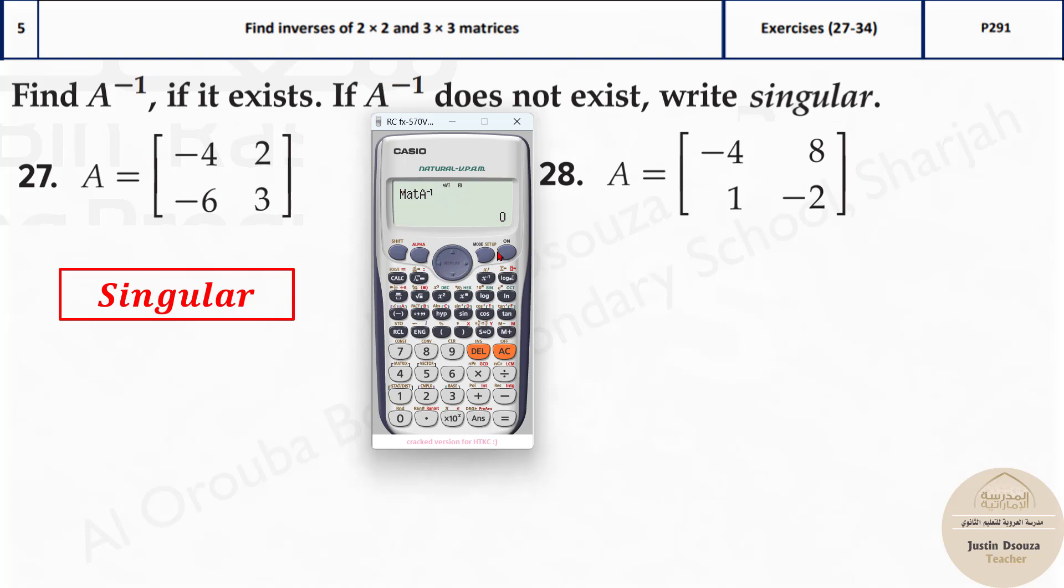Now if you want to double check the determinant is 0, what I can do is, I will just clear it out. You can press shift and 4. There is option number 7 for determinants. And then again, shift and 4, press matrix A. Close the bracket.